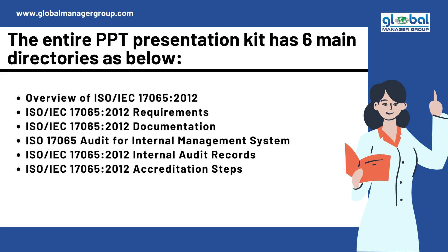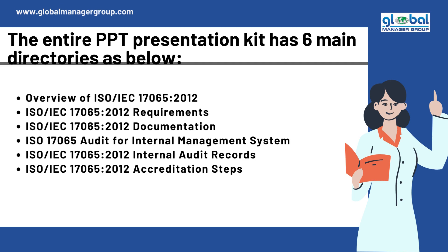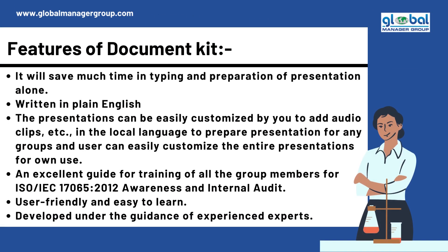The six main directories are: Overview of ISO 17065, ISO 17065 Requirements, ISO 17065 Documentation, ISO 17065 Audit for Internal Management System, ISO 17065 Internal Audit Records, and ISO 17065 Accreditation Steps. Features of the Document Kit: it will save much time in typing and preparation of presentation.